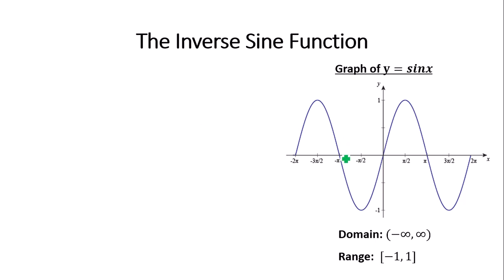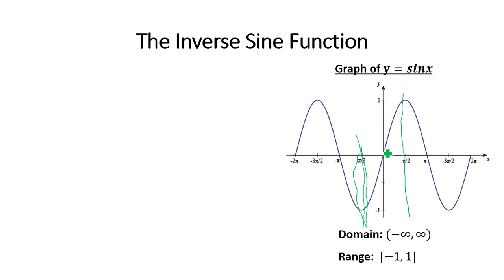The issue here is for a function to have an inverse, it must be 1-to-1, meaning it must pass the horizontal line test. If I draw a horizontal line on this graph, I would touch multiple points at the same time, which means the function cannot have an inverse. So I have to restrict the domain to negative pi over 2 to pi over 2. Cutting the graph from negative pi over 2 to pi over 2 leaves this upward diagonal-looking figure. That's what makes the function 1-to-1.